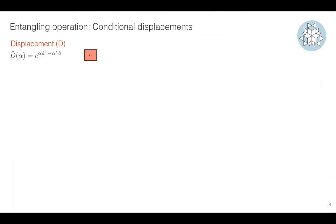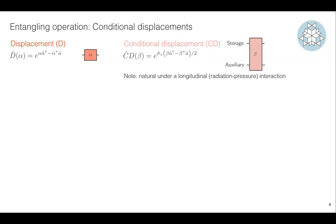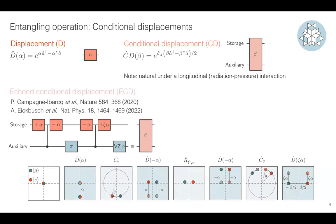How can we perform quantum error correction of GKP states? The first thing we can do is a standard displacement — you just create a coherent state in the cavity. But we want conditional displacement, meaning we displace the cavity field conditional on the state of the auxiliary. This is natural if you have a radiation pressure interaction, which is one reason this was first achieved in trapped ions. But this is not the interaction we have natively in circuit QED — we have the dispersive interaction.